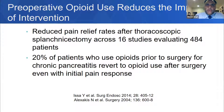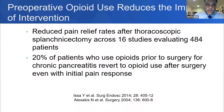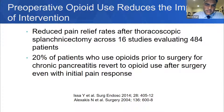We also know that preoperative opioid use can reduce the impact of intervention in chronic pancreatitis. There are reduced pain relief rates after thoracoscopic splanchnicectomy across 16 studies evaluating about 484 patients. About 20% of patients who use opioids prior to surgery for chronic pancreatitis revert to opioid usage even after an initial pain response. Clearly, preoperative opioid use can reduce the impact of these interventions.